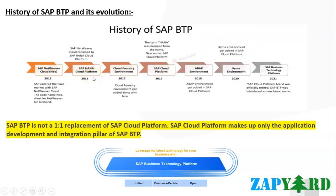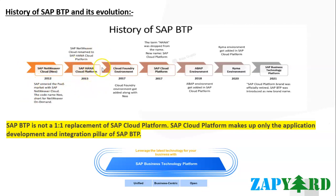You may encounter terms like Cloud Foundry or Kyma or different environments, but don't worry — we will cover them shortly. Initially unveiled as SAP NetWeaver Cloud NEO, belonging to the SAP HANA Cloud portfolio in around October 2012, the platform was then reintroduced with the new name SAP HANA Cloud Platform in May 2013, becoming the foundation for SAP Cloud Products including SAP Business Objects Cloud.